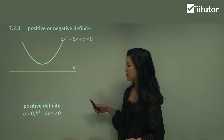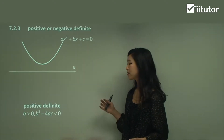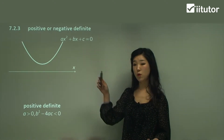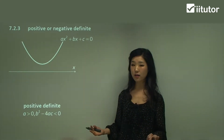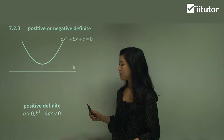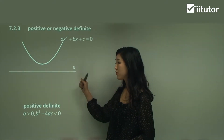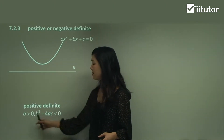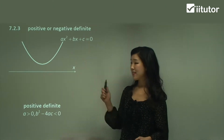The discriminant must be less than zero — a negative number. If we have the square root of a negative value, it's imaginary or unreal. The reason for that is because that particular function will have no roots. So if the discriminant is a negative number or less than zero, that means it will have no roots, therefore floating above the x-axis. Please remember these two cases for the positive definite function.